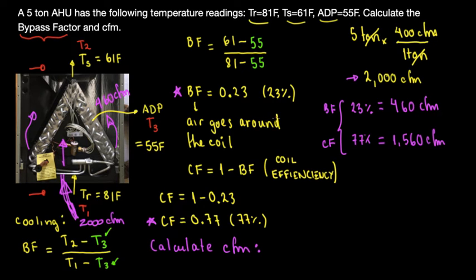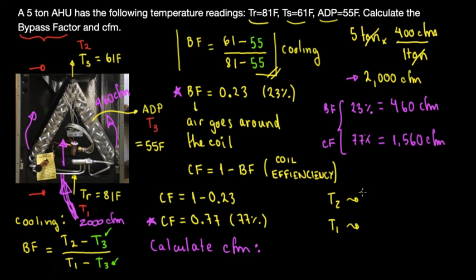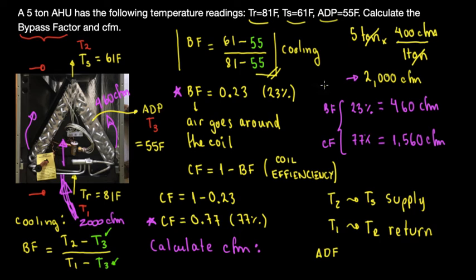To summarize the formula: for cooling, the bypass factor uses temperature two (supply) and temperature one (return) as the key variables. The ADP — apparatus dew point, temperature three — can be assumed at approximately 55°F or 50°F. That's temperature three, the apparatus dew point. These are all the variables needed to fully analyze the coil.